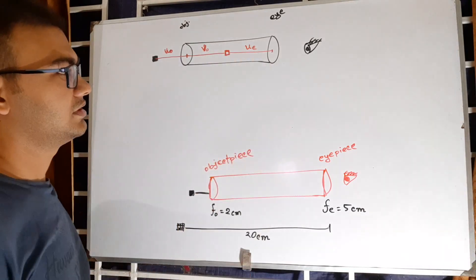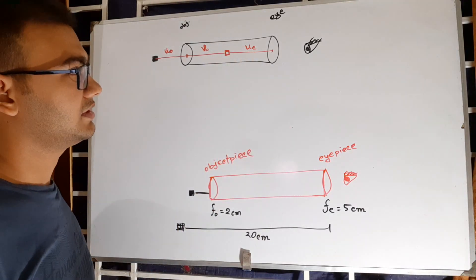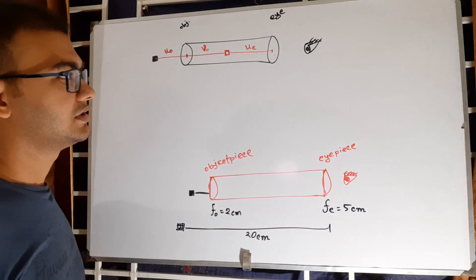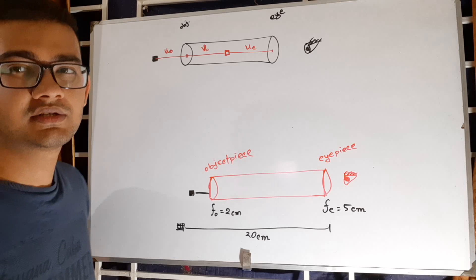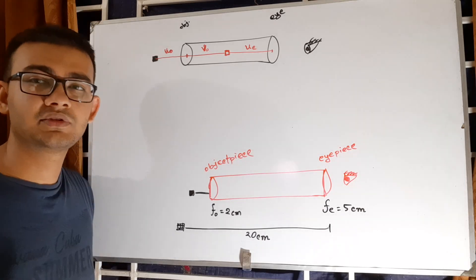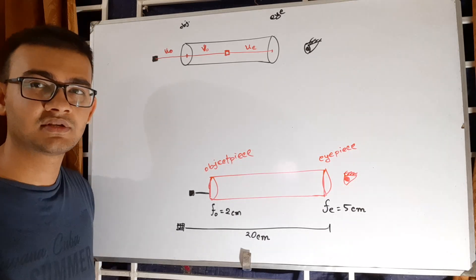When you see an object and want to see it clearly, you need it at least 25 centimeters away from your eye to get a clear image.